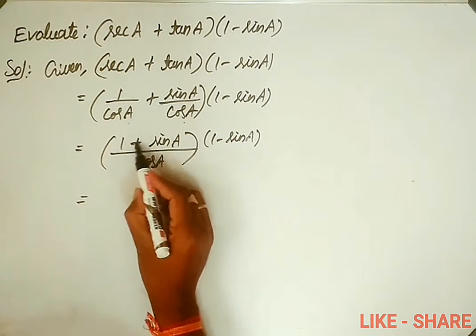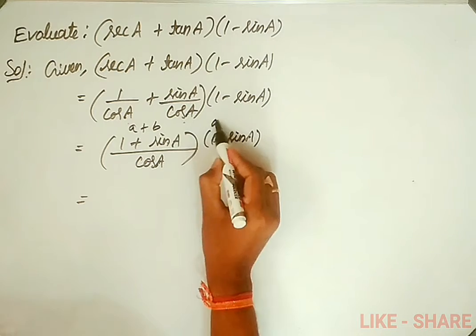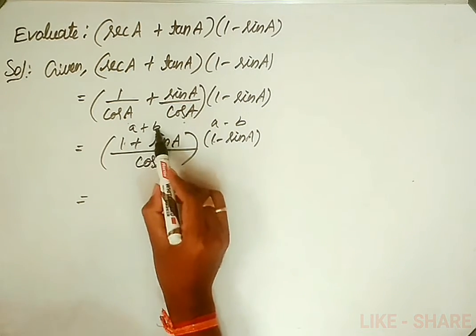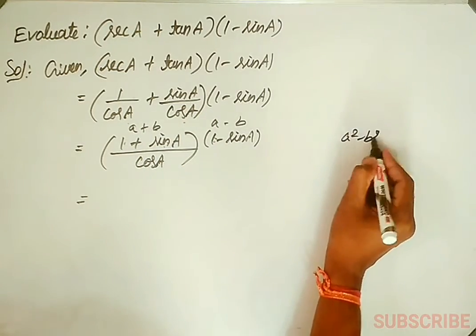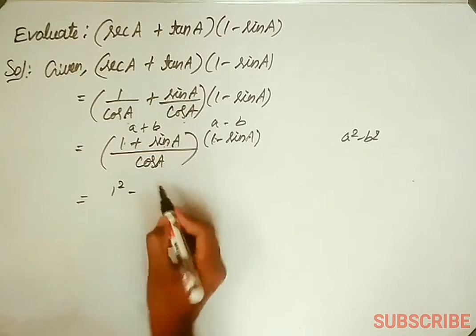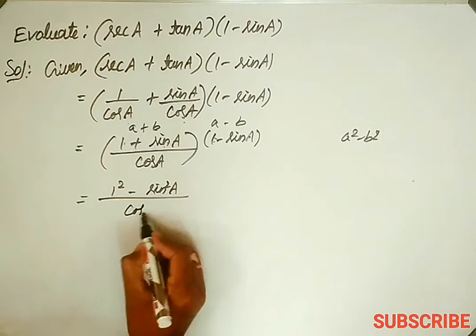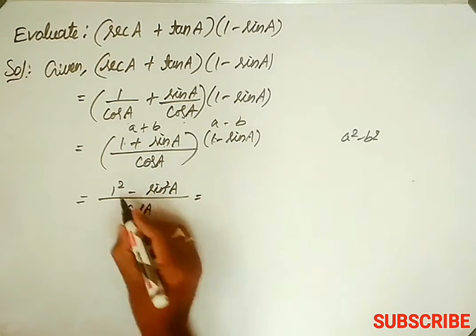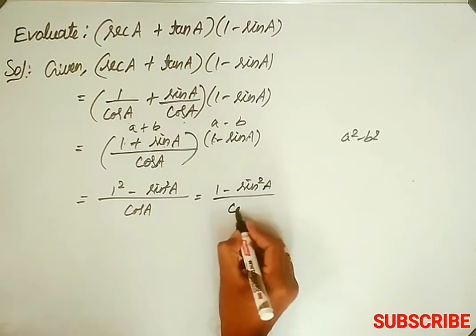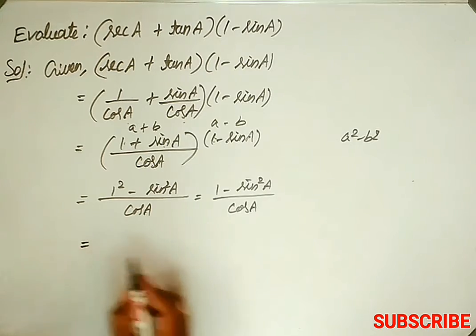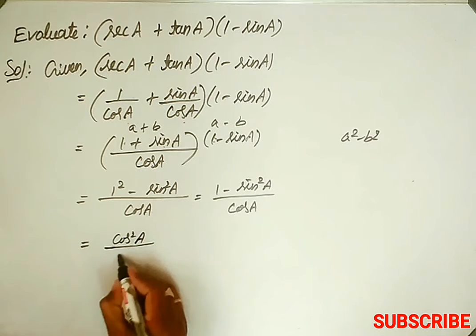Now the numerator has (1 plus sin a) and (1 minus sin a) — this is nothing but (a plus b) into (a minus b), where a value is 1 and b value is sin a. So we write it as a squared minus b squared: 1 squared minus sin squared a, over cos a, which equals 1 minus sin squared a, over cos a.